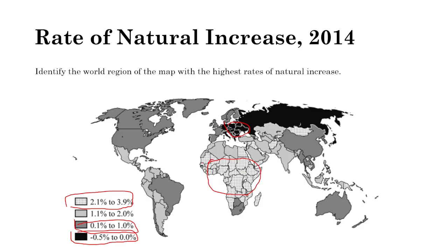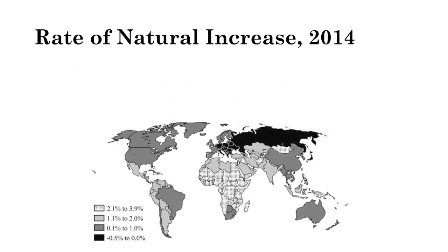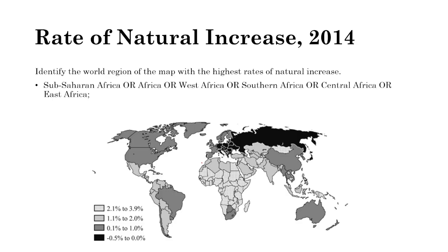An FRQ prompt asks: identify the world region with the highest rates of natural increase. Most acceptable answers are Sub-Saharan Africa, Africa generally, West Africa, Southern Africa, or Central Africa — because most countries in Africa have a 2.1 to 3.9% natural increase rate.